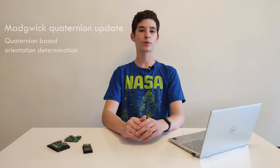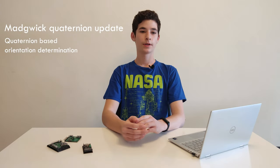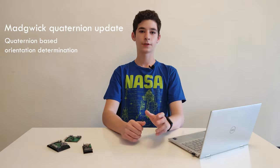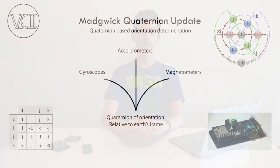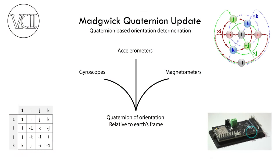The first algorithm is the MEDWIC quaternion update filter. It's a quaternion-based fusion system that runs 400 times a second, or at 400 hertz. It mixes values from the gyroscopes, accelerometers, and magnetometers to compute the computer's orientation in relation to Earth's frame.